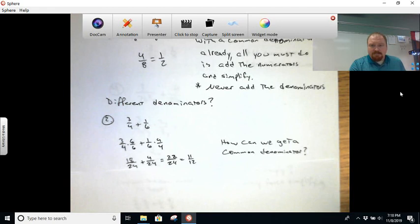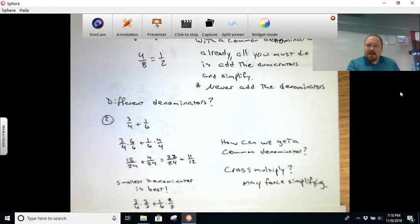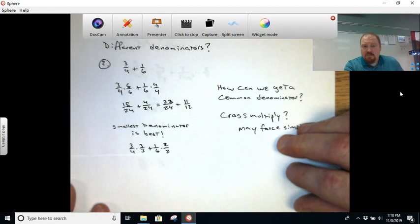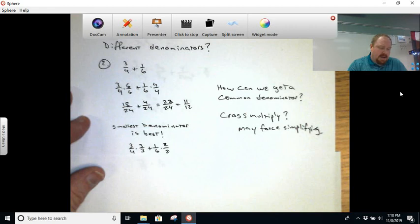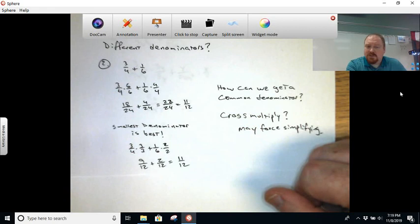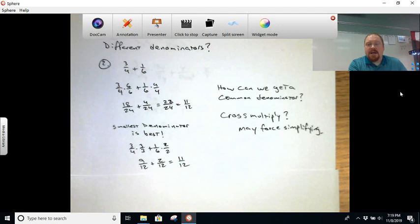However, if you notice, we had to reduce there at the end. The reason we did that is because while we found a common denominator, it is not what they call the lowest common denominator. So real simply, you ask yourself, what is the smallest number that both four and six will divide into evenly? Well, that's pretty simple. 12. So if we do four times three we can get 12, and if we do six times two we can get 12. You just have to make sure you're multiplying the top and bottom by the same thing. And then when you simplify, three times three is nine, one times two is two. Add straight across, you get 11 over 12. You don't need to simplify. That's going to become extremely important here in just a moment.